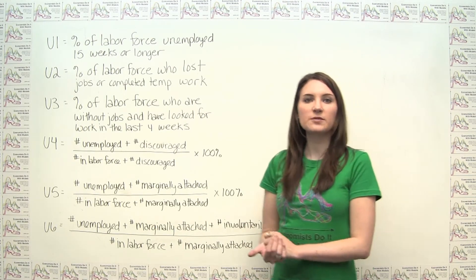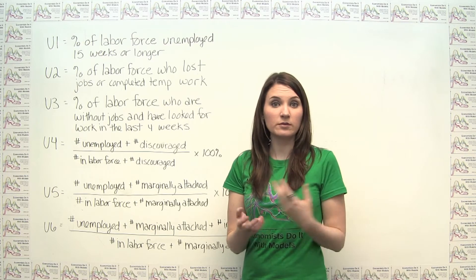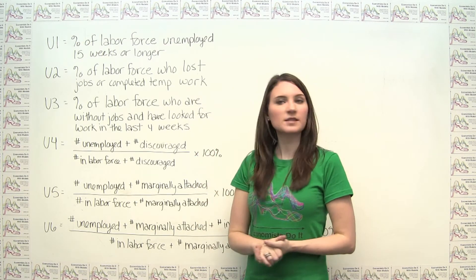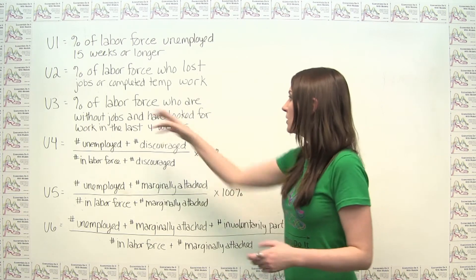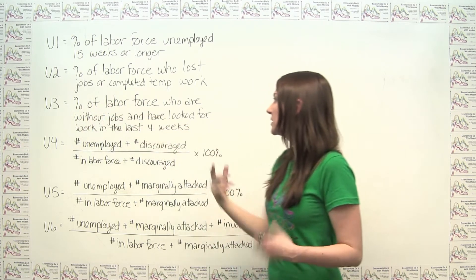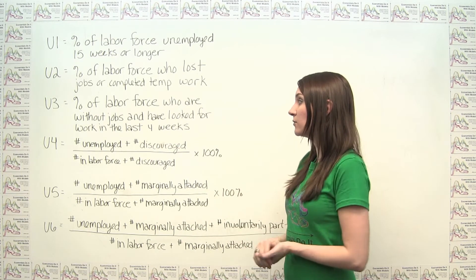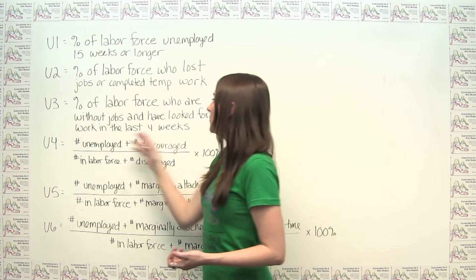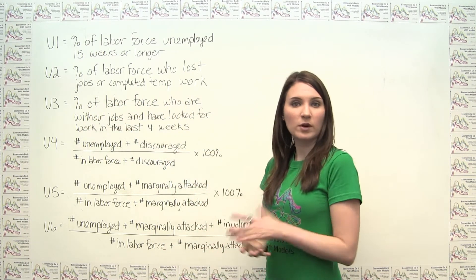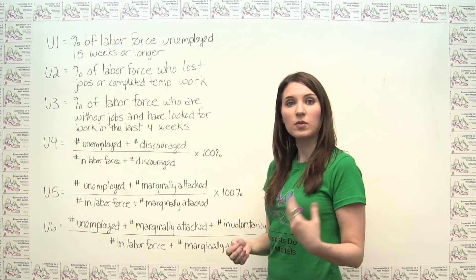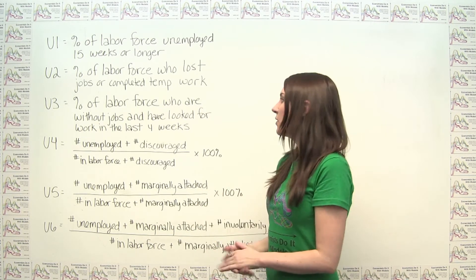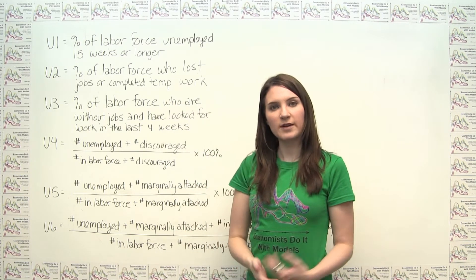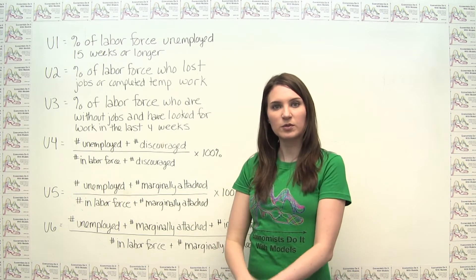U3 is the specific measure of unemployment that economists refer to when talking about the unemployment rate. U3 is just the percentage of the labor force who are without jobs and have looked for work in the last four weeks. Those people without jobs who have looked for work in the last four weeks are counted as unemployed, so this unemployment rate is the number of unemployed people divided by the number of people in the labor force times 100%.